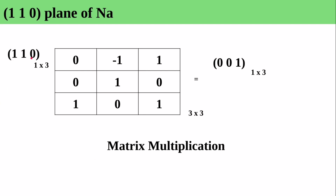The plane vector is 1×3 and the transformation matrix is 3×3, giving a result of 1×3 — following the matrix multiplication rule. The (110) plane vector multiplied with each column gives: first column gives 0, second column gives 0, third column gives 1. So we get [001] and this is the transformation matrix for the (110) plane.